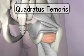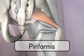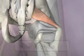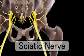The other two powerful external rotators are the quadratus femoris and the piriformis. You may know about the piriformis because the sciatic nerve goes right under it, and in a few people the nerve actually goes right through the muscle on its way down the leg.